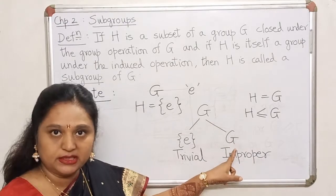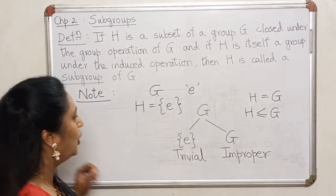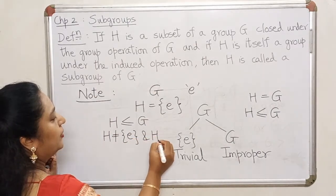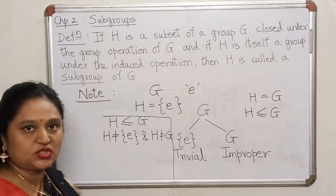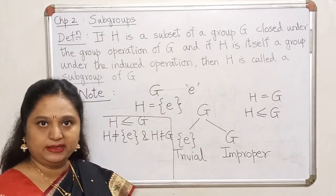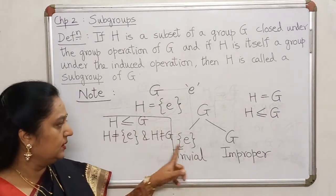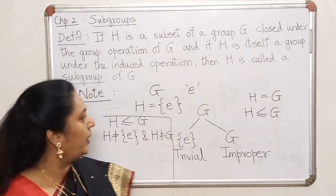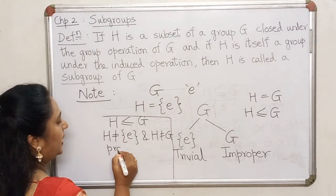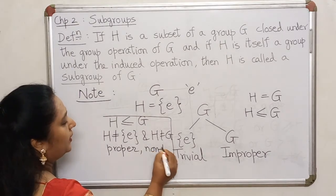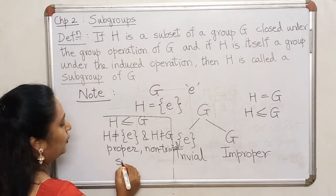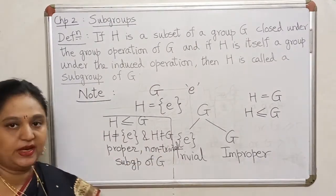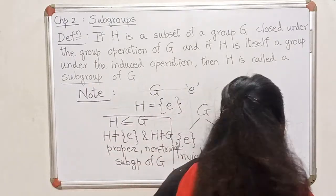Any subgroup of G which is different from {e} and different from G — what would you like to call it? Pause your video and think about it. If it is not trivial and it is not the whole group, it is not improper, so it is proper. Any subgroup of G different from these two will be called a proper non-trivial subgroup of G.